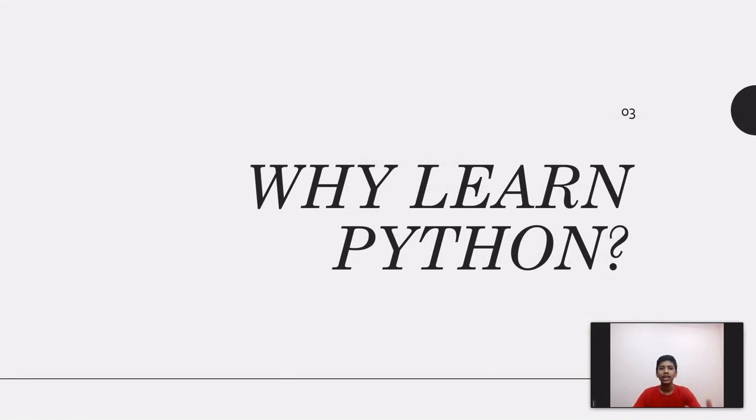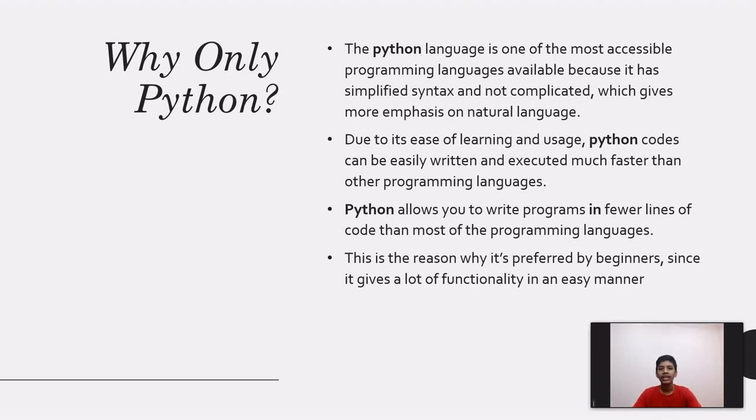Why should you learn Python? Why only Python? Why not learn other languages such as C and Java? That's because Python is really easy to learn. It's one of the most accessible programming languages because it has very simplified syntax and is not complicated. Due to its ease of learning, Python codes can be easily written and executed much faster than other programming languages. Python also allows you to write huge programs with fewer lines of code. This is the reason why it's preferred by beginners, since it gives a lot of functionality in a simple manner.